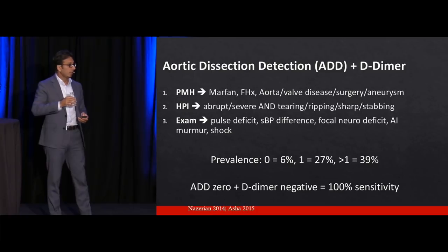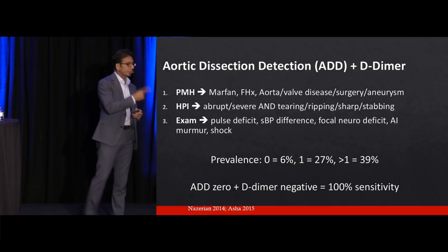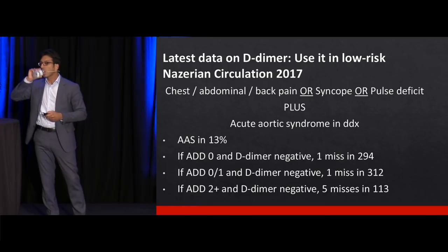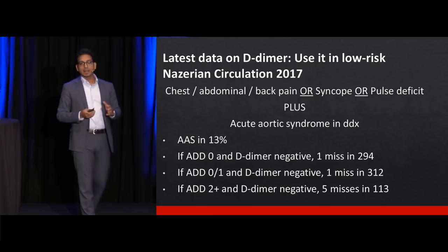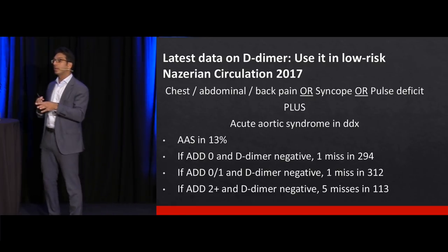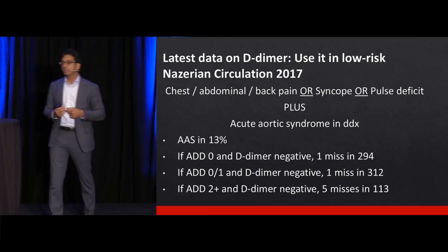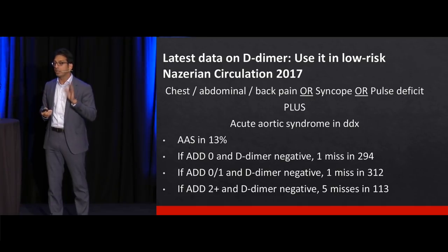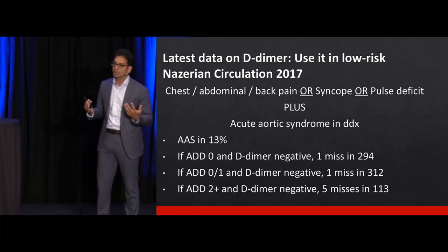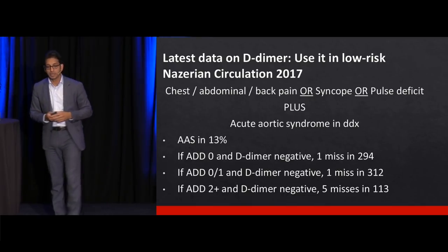The latest data showed: if ADD is zero and D-dimer is negative, only one case was missed in 294 patients. If ADD is zero or one and D-dimer is negative, one miss in 312 patients. If ADD is two or more and D-dimer is negative, five misses in 113 patients — that's unacceptably high. So if ADD is two or more, you need the CT. The D-dimer in this study was not age-adjusted. And yes, the systolic blood pressure difference is included as a sensitivity measure even though its utility is limited — but even including it, ADD zero or one remains an acceptable threshold.